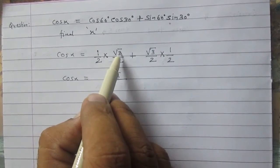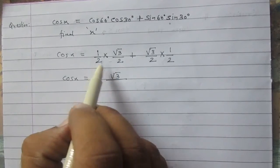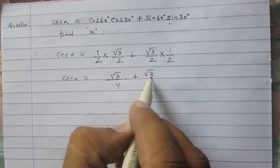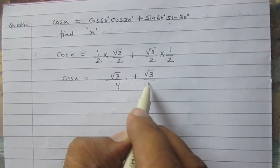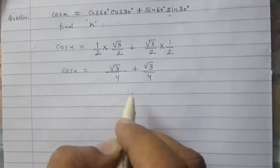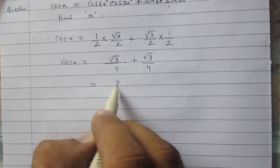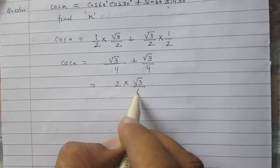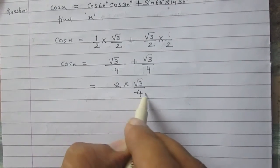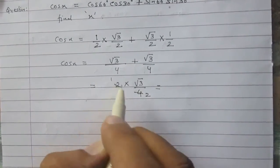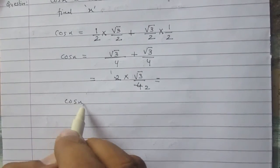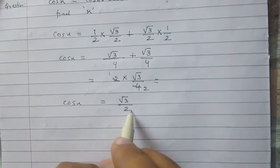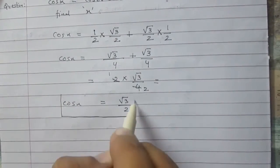Simplifying: (1/2)(√3/2) = √3/4, and similarly the second part is also √3/4. Adding them gives 2 × (√3/4) = √3/2. So cos x = √3/2.